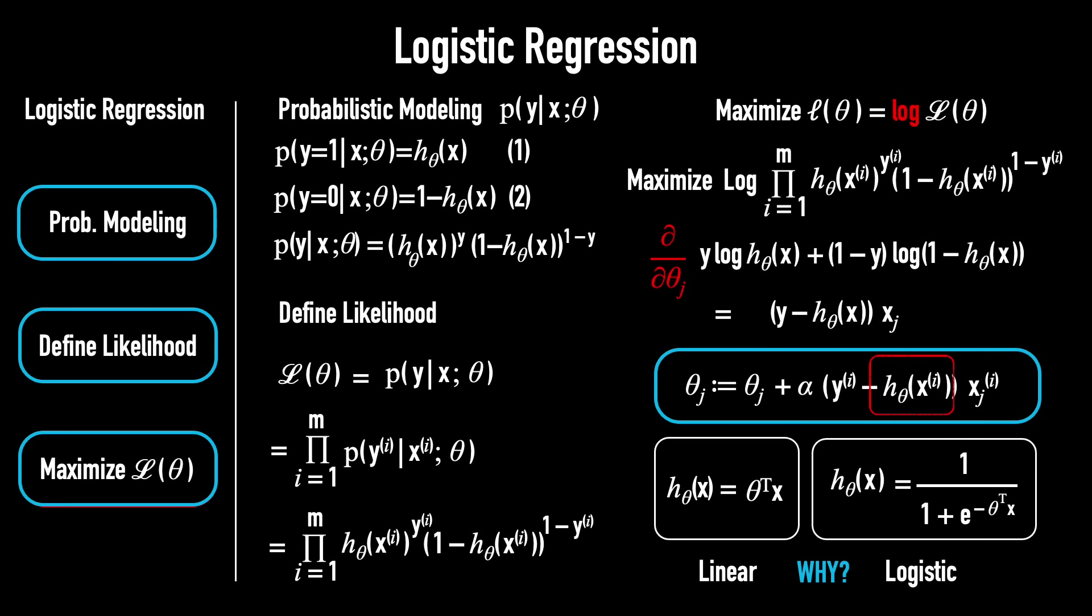But why do two rather different algorithms have the same update rule? Is this just a coincidence? Or is there a deeper reason behind it? We'll answer that question in lecture four, generalized linear models. For now, lecture three ends here. Thank you for watching.